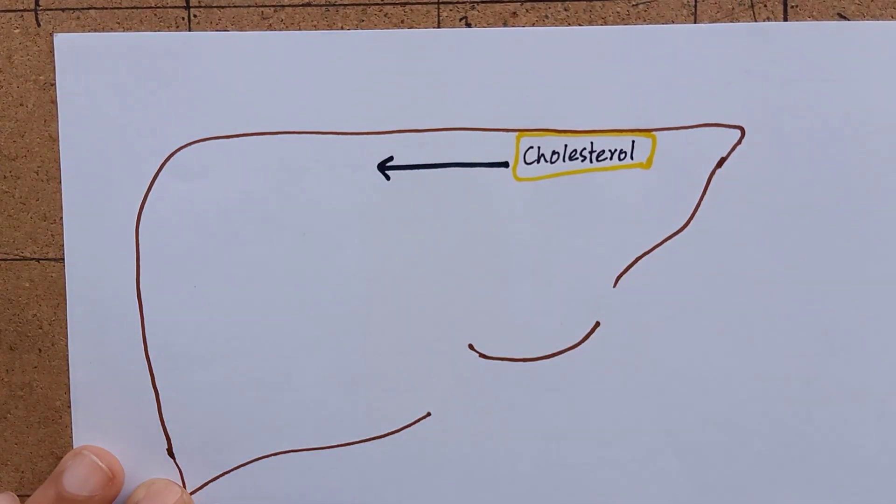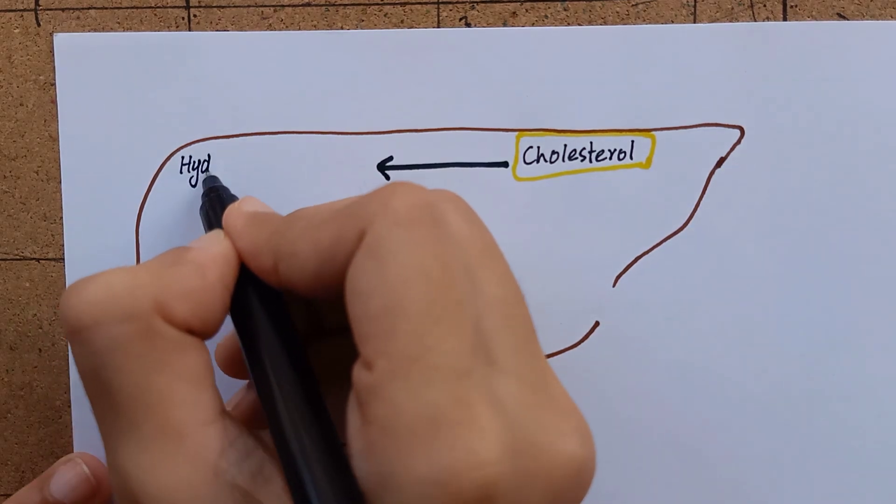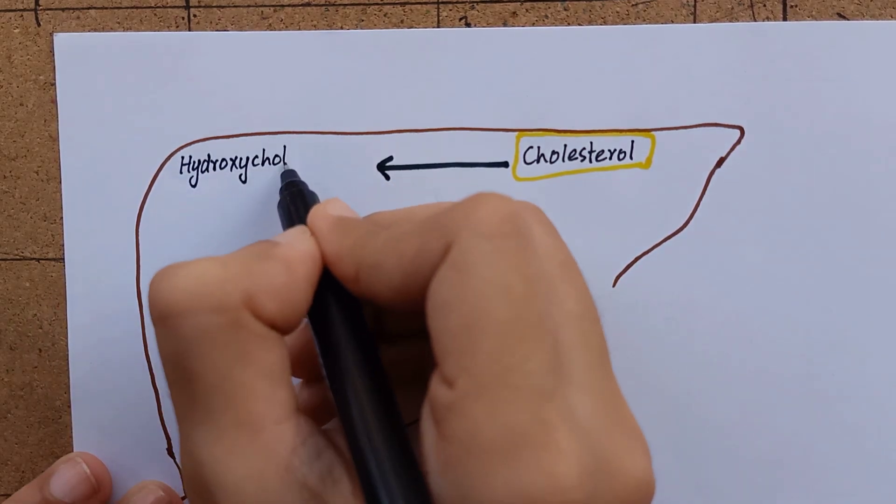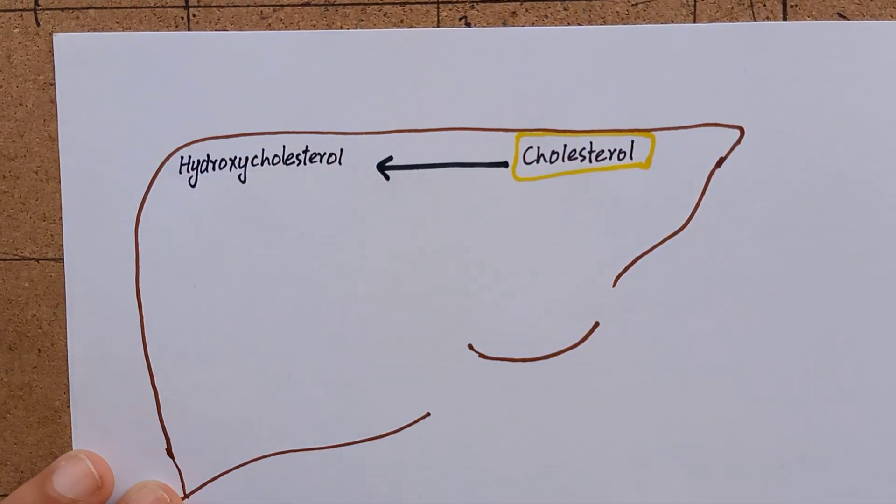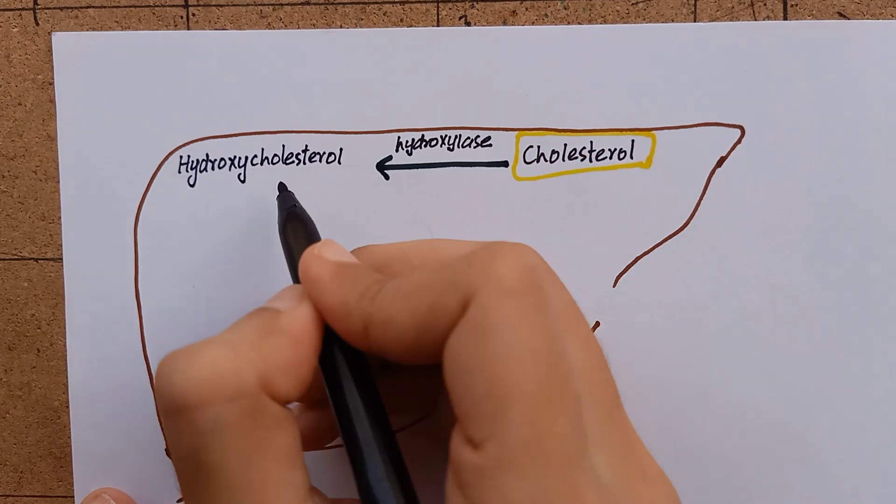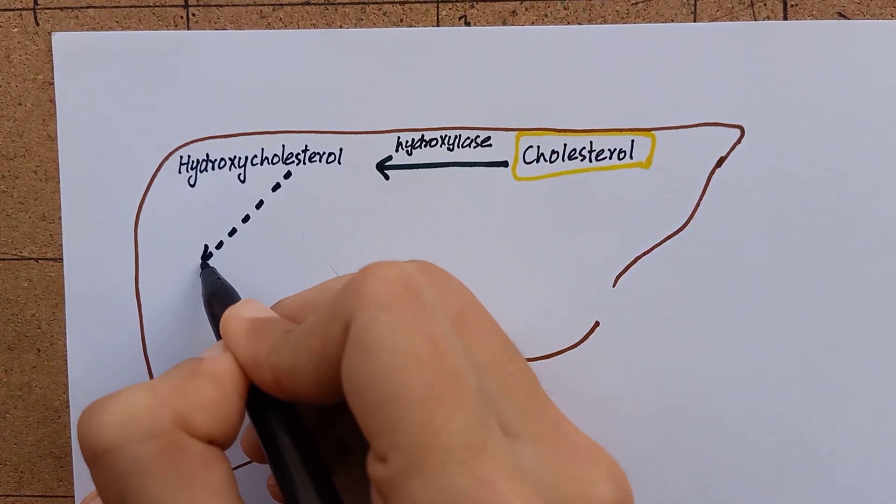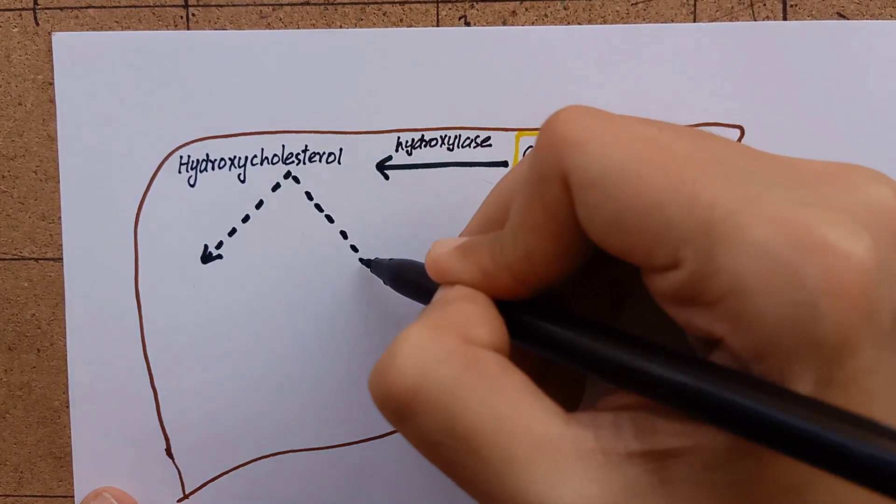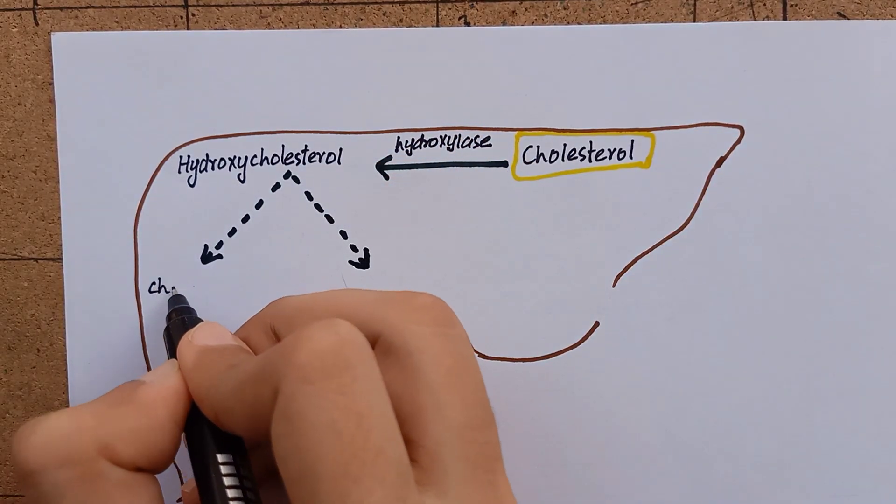For the synthesis of bile acids, cholesterol undergoes hydroxylation to produce hydroxycholesterol. The enzyme used here is hydroxylase, and cholesterol is converted to hydroxycholesterol. Bile acids are formed from hydroxycholesterol after a series of reactions.